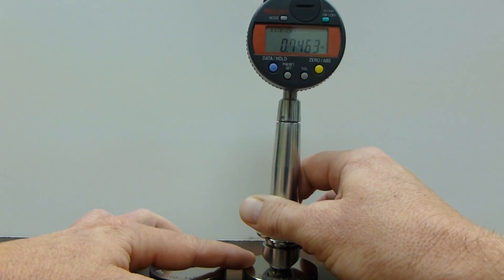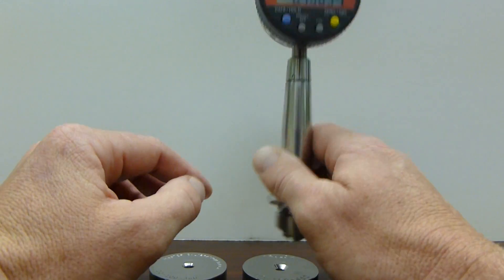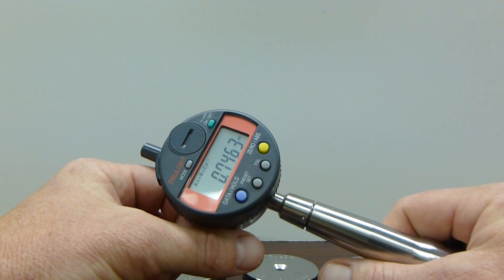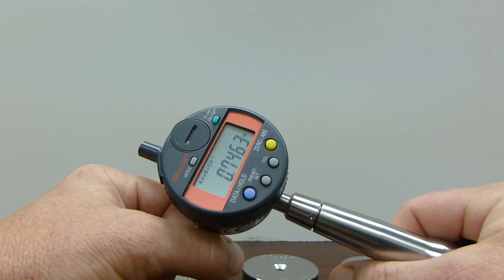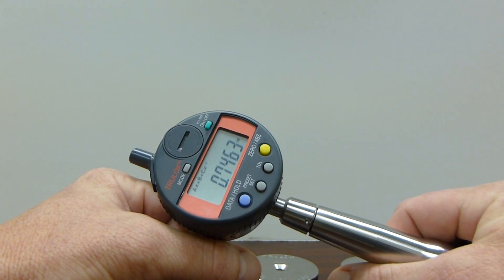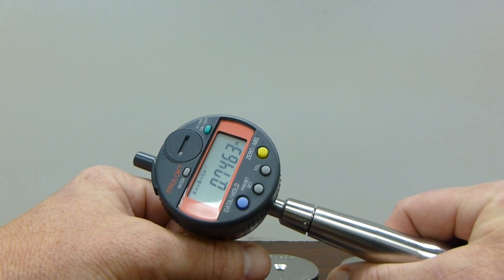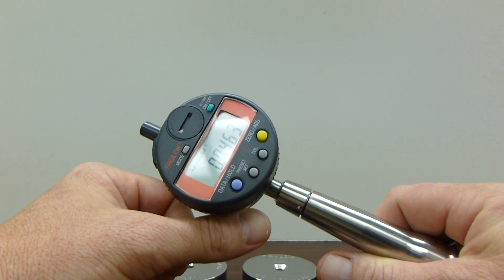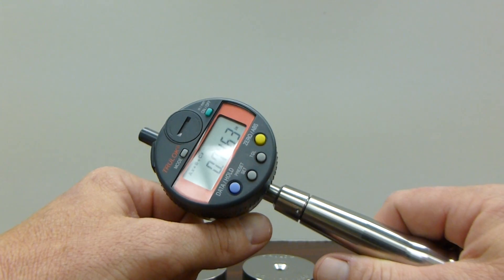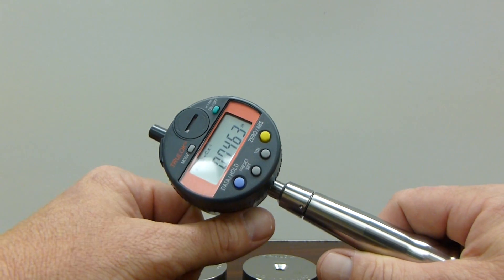Alright, this concludes our countersink diameter demo. Please visit our website at www.truelock.com to see the various measuring devices we carry, including countersink depth gauges, hole perpendicularity, hole diameter, fastener flushness, and fastener head protrusion.